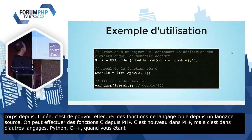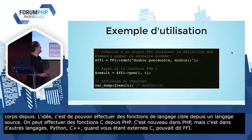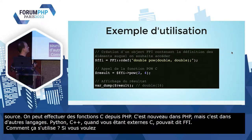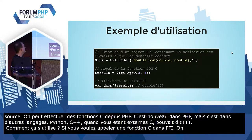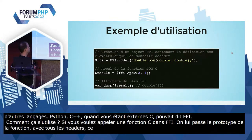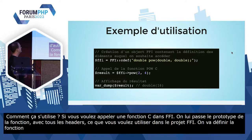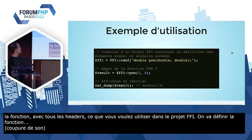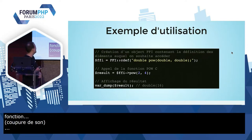Comment ça s'utilise basiquement ? Quand vous allez vouloir appeler une fonction C via FFI, vous allez commencer par créer un objet FFI en utilisant FFI::cdef, en lui passant le prototype de la fonction, ainsi que tous les headers — tout ce que vous mettriez dans un .h en C — de ce que vous voulez utiliser. Ici, on va définir la fonction pow, qui prend deux paramètres doubles et qui retourne un double. Ensuite, sur votre objet FFI, vous allez pouvoir appeler la méthode pow avec vos deux paramètres 2 et 4, et donc ça va être stocké dans le résultat. Vous faites un var_dump du résultat, ça vous obtiendrez le résultat.